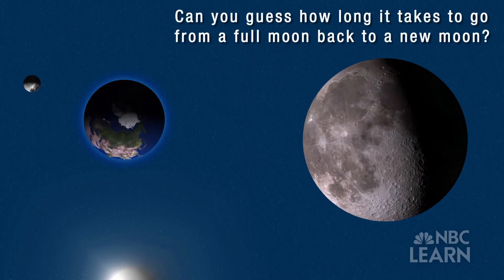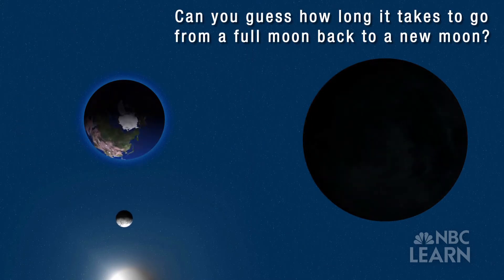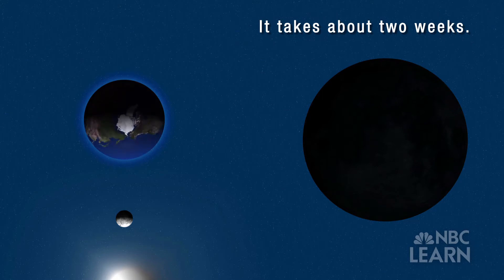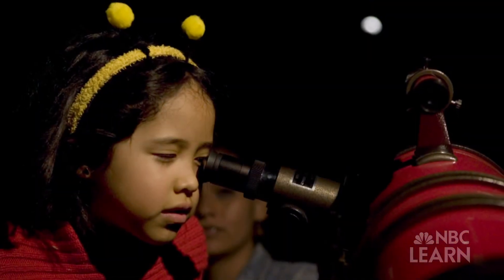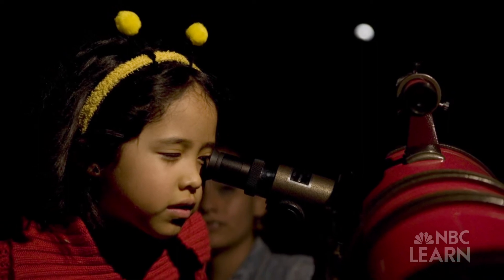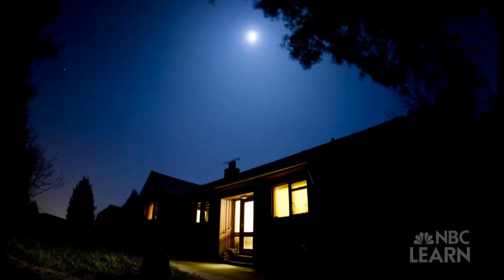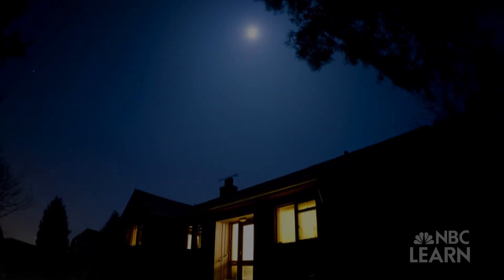Can you guess how long it takes to go from a Full Moon back to a New Moon? That's right — about two weeks, or about half a month. But no matter how often you look at the Moon, there is one thing you can never see from Earth: the far side of the Moon, the side that always points away from Earth.